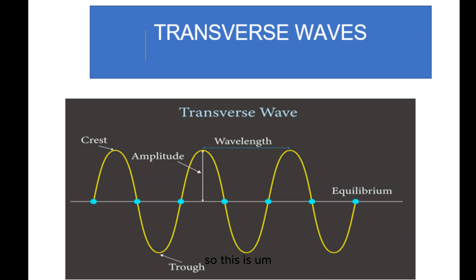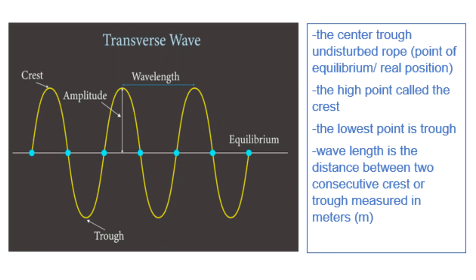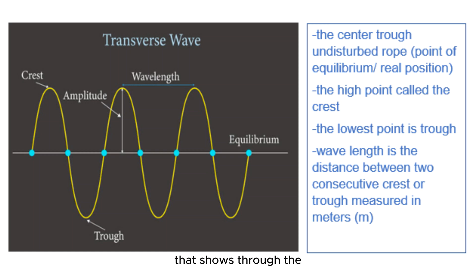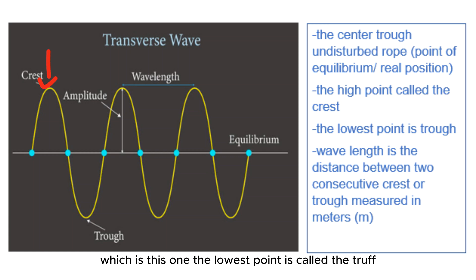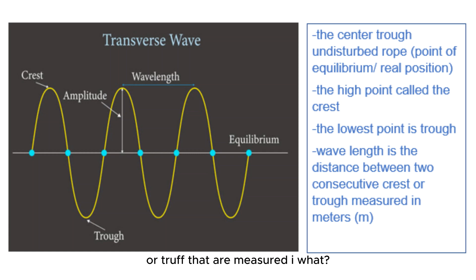The center line that runs through the rope is called the rest position, which is the point of equilibrium. The highest point is called the crest, and the lowest point is called the trough. The wavelength is the distance between two consecutive crests or troughs, and it is measured in meters.